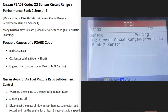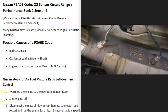Today I'm talking about a Nissan with the P2A03 code, what it is, and how you go about fixing it. The Nissan P2A03 code is an O2 sensor circuit range performance Bank 2 Sensor 1. There are sensors located on the exhaust that do two things.